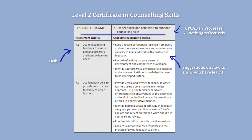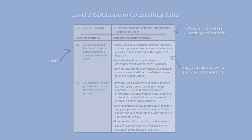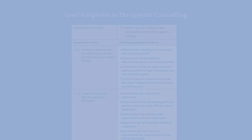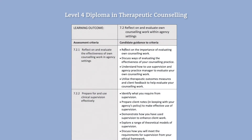This structure is applied to all our levels and qualifications. In this extract, we're looking at the seventh and final learning outcome from our Level 4 Diploma in Therapeutic Counselling. The learning outcome is to reflect and evaluate own counselling work within agency settings.